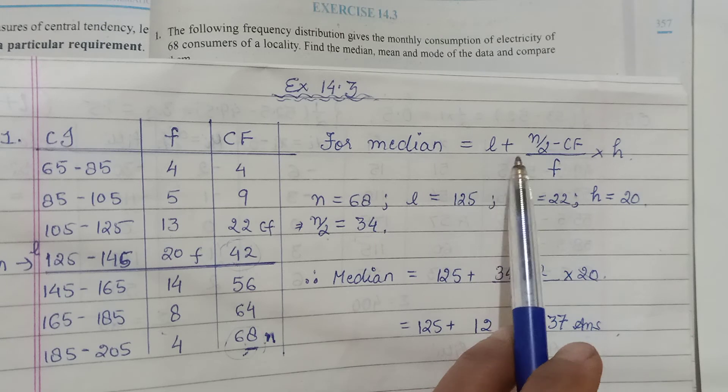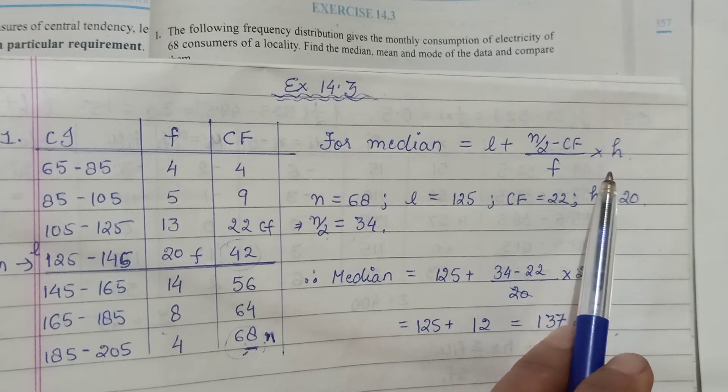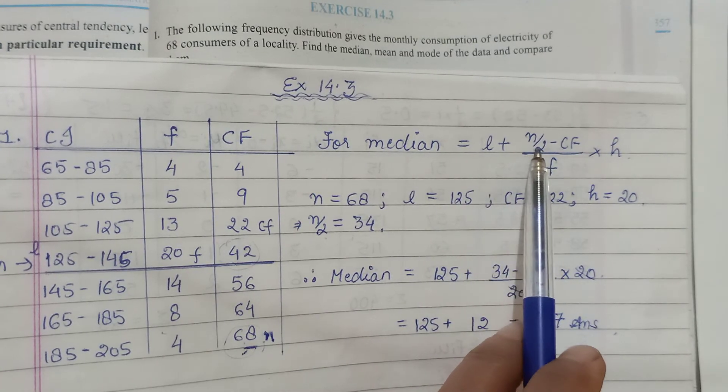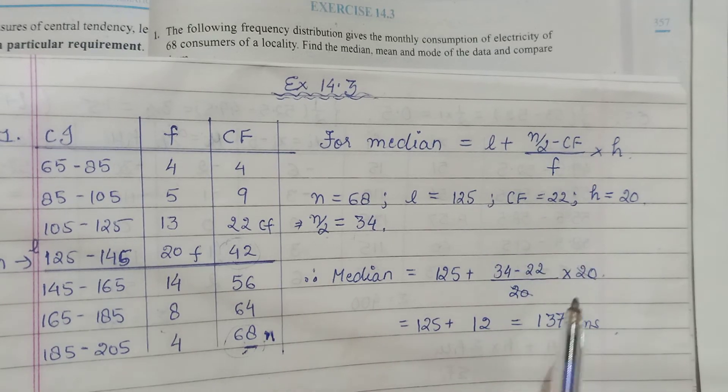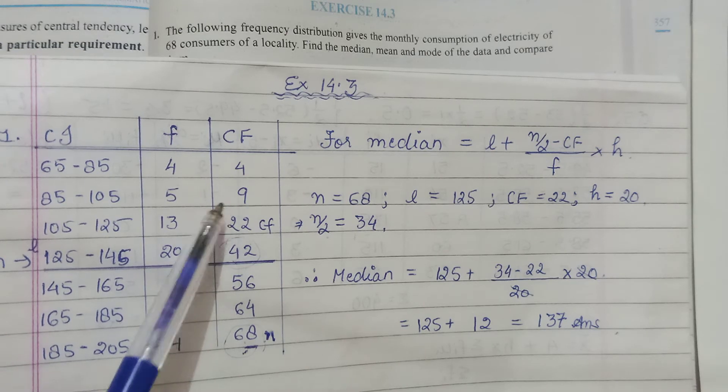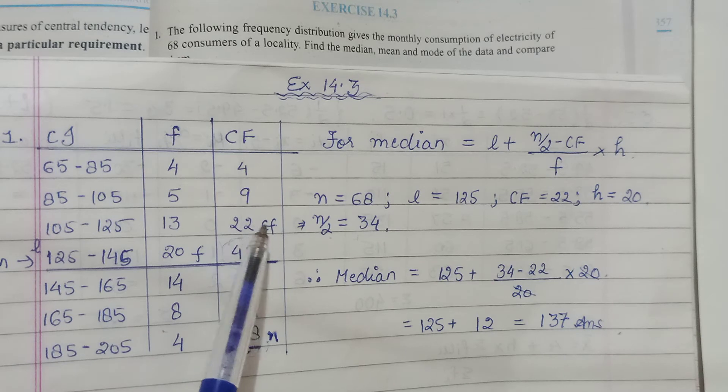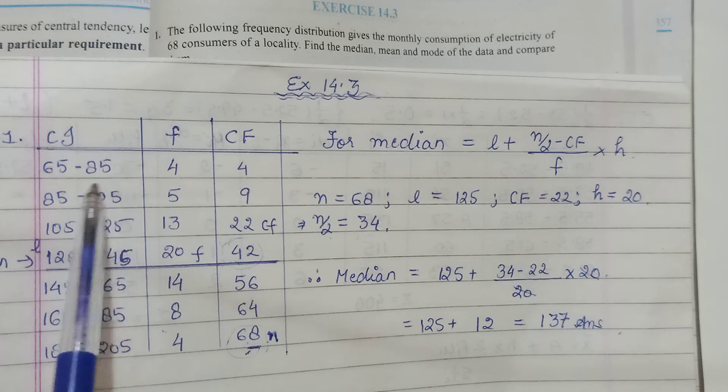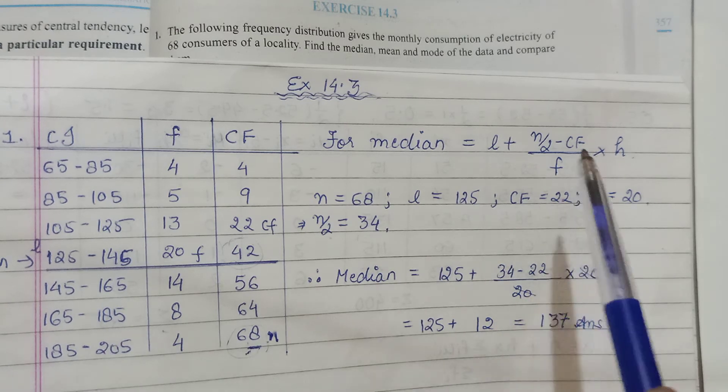Median was l plus n by 2 minus cf upon f into h. That was your formula. In this, l is said to be the lower limit of the median class. n we know is the total frequency. CF will be cumulative frequency before that class. As I have mentioned here in the table, ki jaisi mujhe median class mili, isse pehle wali CF yahaan use hogi. And frequency of this class will be used. h obviously is the length of the interval. Here we will be dealing with questions with equal class intervals.